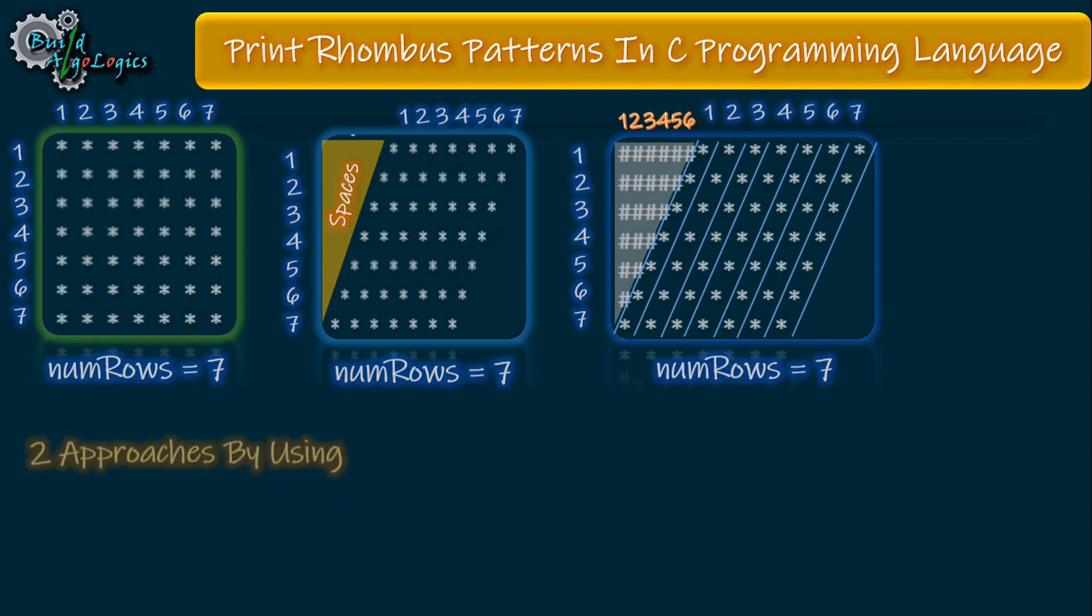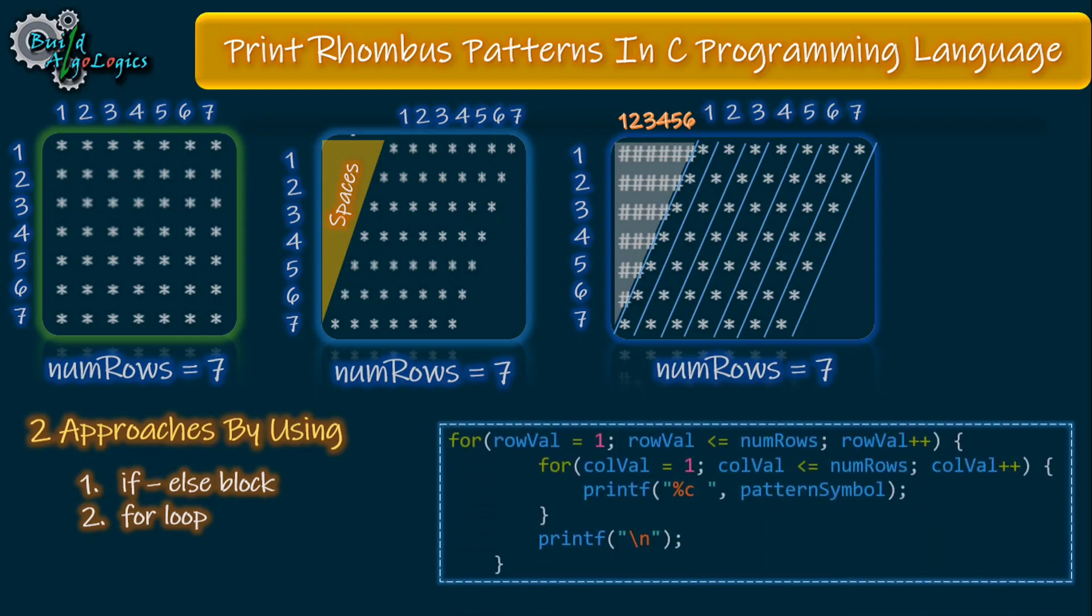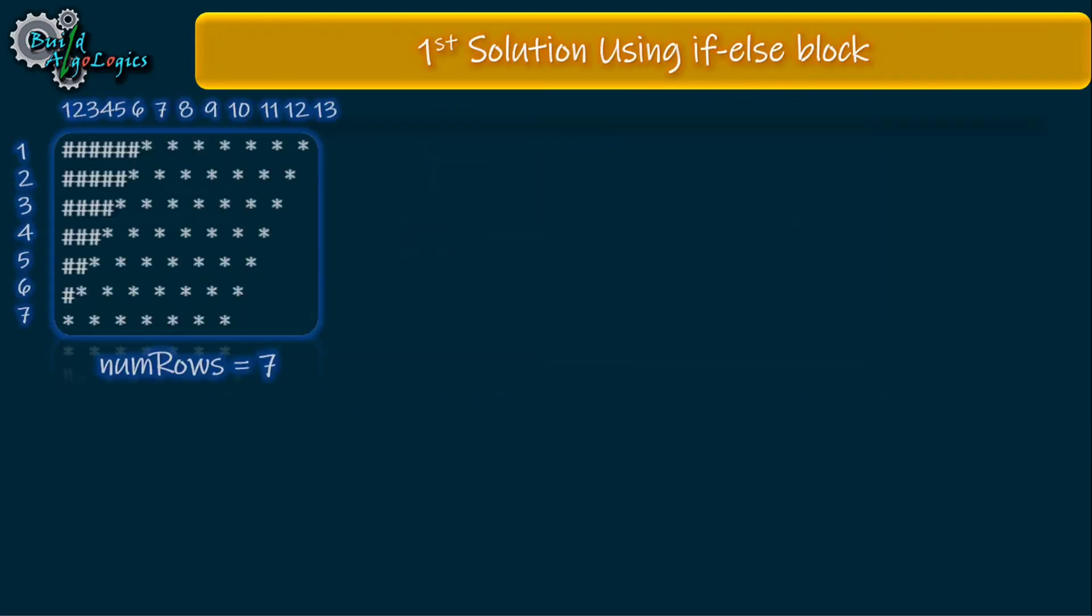By looking at this problem I have two approaches in my mind to solve it: one by using if-else block and another one is by using one extra for loop. We'll write our code here using both of these approaches. Basically I am talking about this part here. The outer loop will be the same, but this part will be changed by either using if-else block or using one extra for loop.